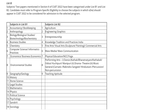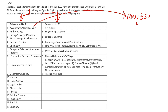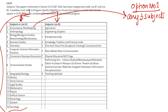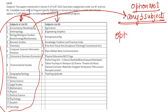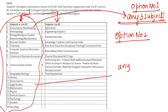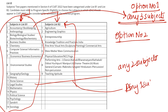Next is List B. You will see two lists: List B1 and List B2. Normally, you can choose any three subjects from these lists. Option one is any three subjects from B1. Option two is any two subjects from B1 and one from B2. It depends on which subjects you have. Take a screenshot of this for reference.